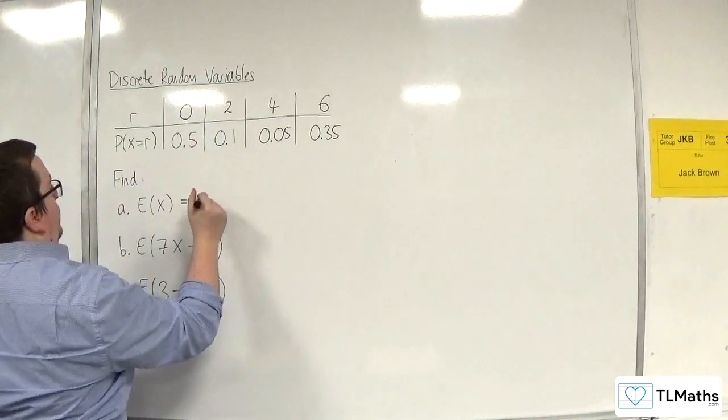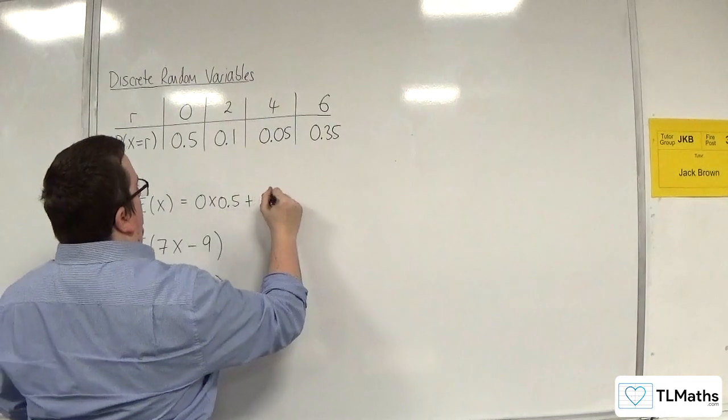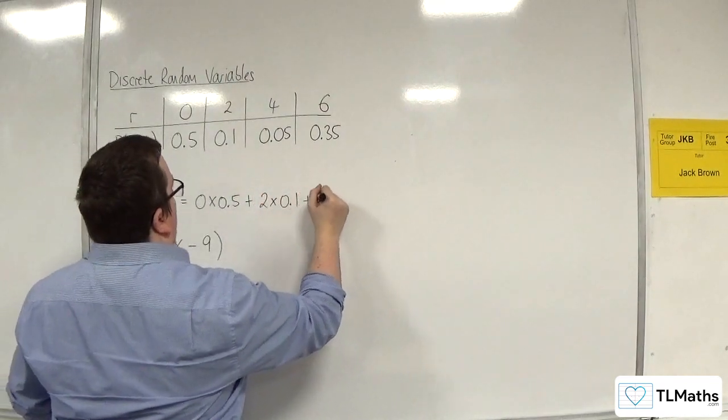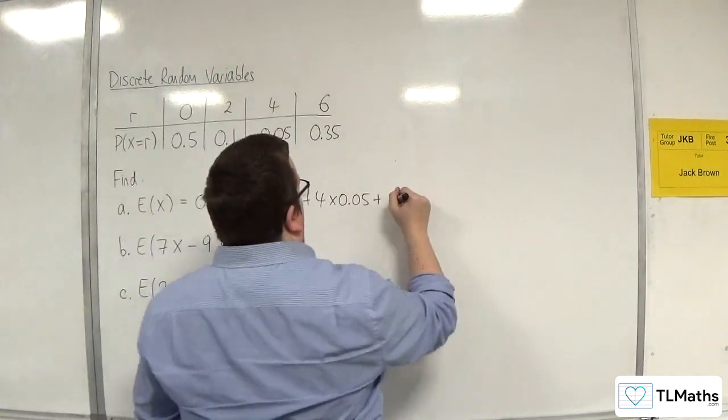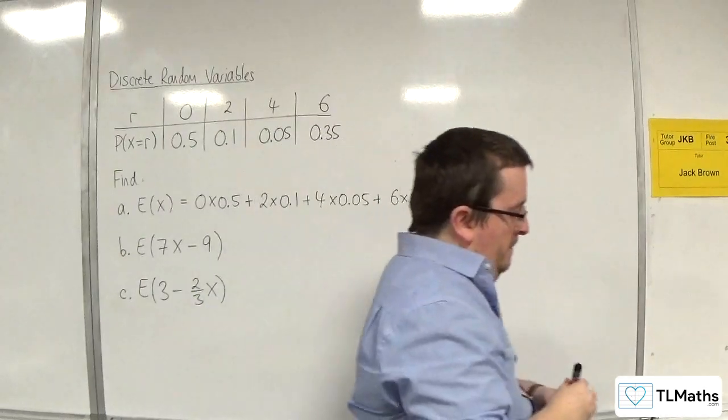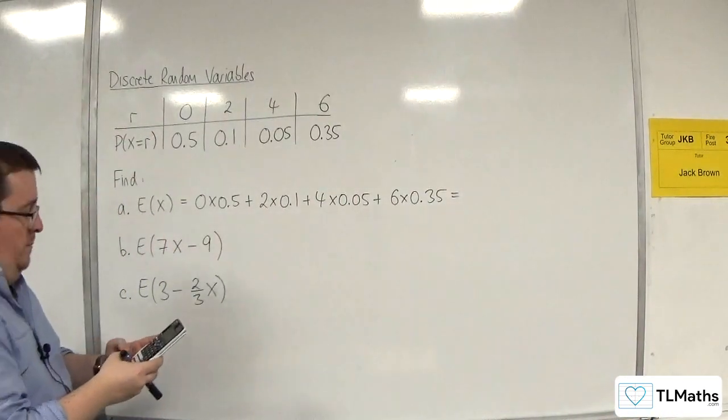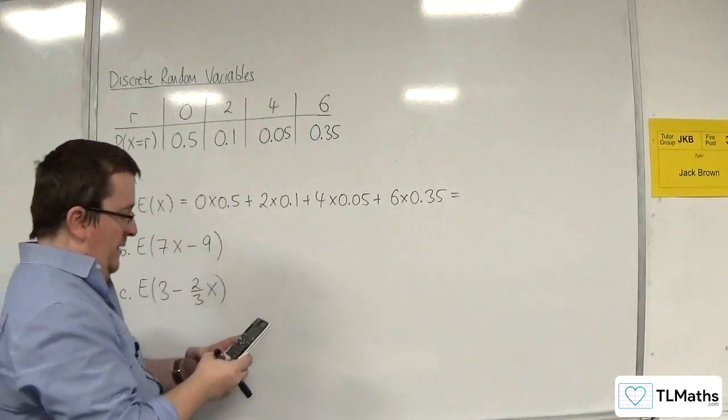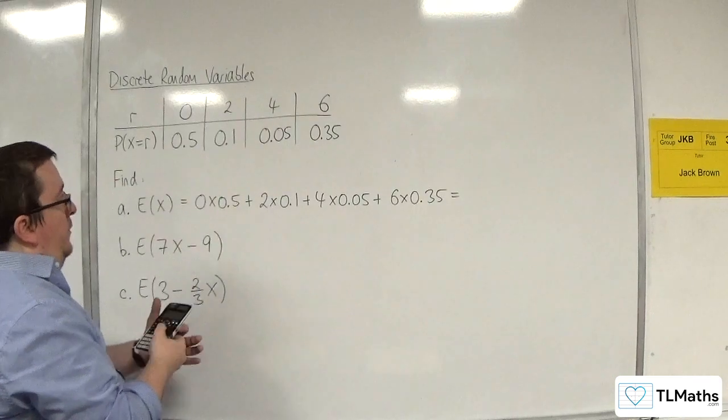So that's going to be equal to 0 times 0.5 plus 2 times 0.1 plus 4 times 0.05 plus 6 times 0.35. So 2 times 0.1 plus 4 lots of 0.05 plus 6 times 0.35. And so we get 2.5.